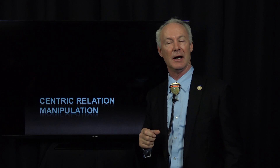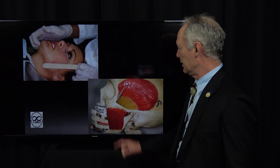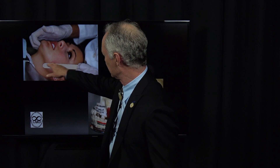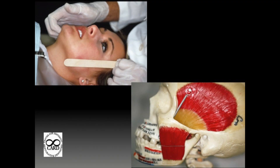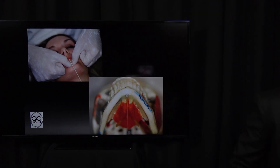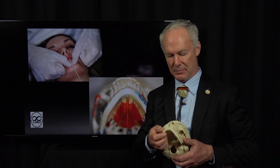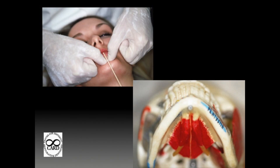Now let's talk about how you manipulate the mandible or the condyle into centric relation. First, have the patient raise their chin — they lay back and raise their chin, getting the chin off the neck. The masseter and medial pterygoid muscles are represented by your fingertips. So the fingertips go on the bottom of the mandible, just the fingertips, like a ballet dancer. These represent the masseter, temporalis, and medial pterygoid.